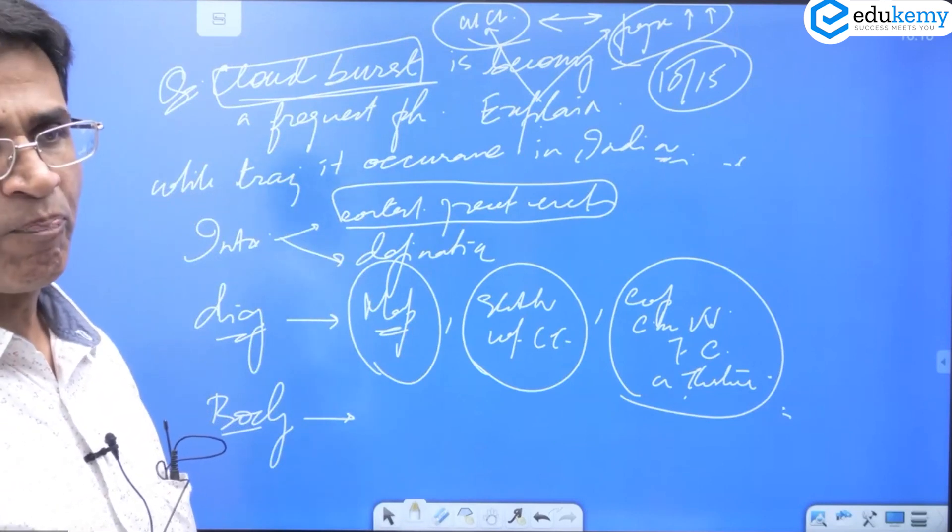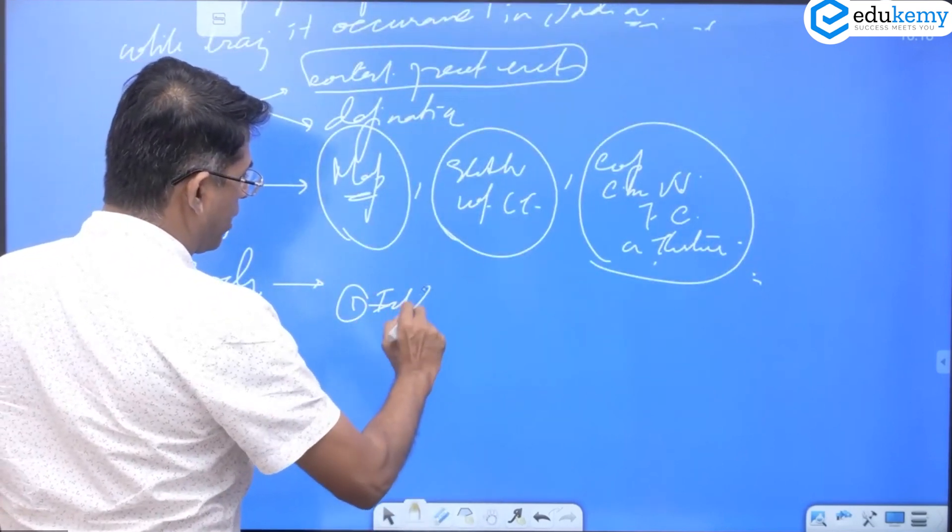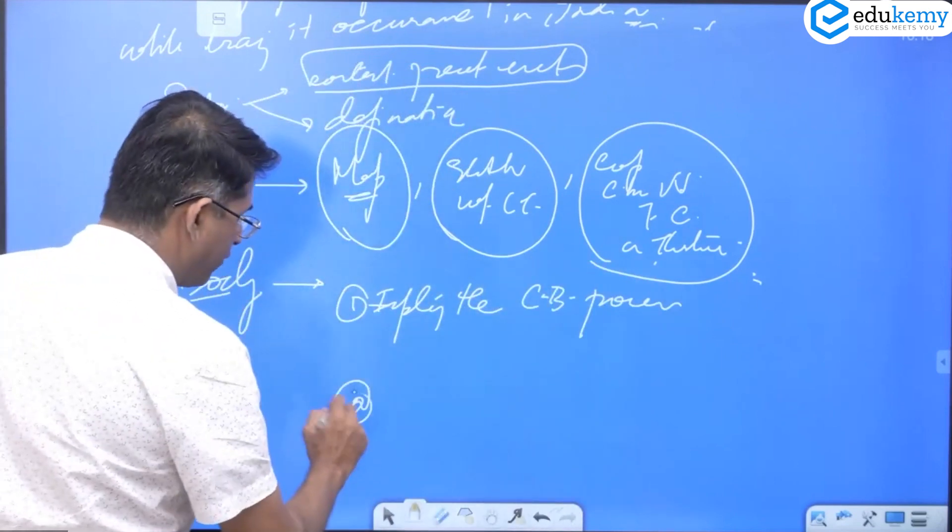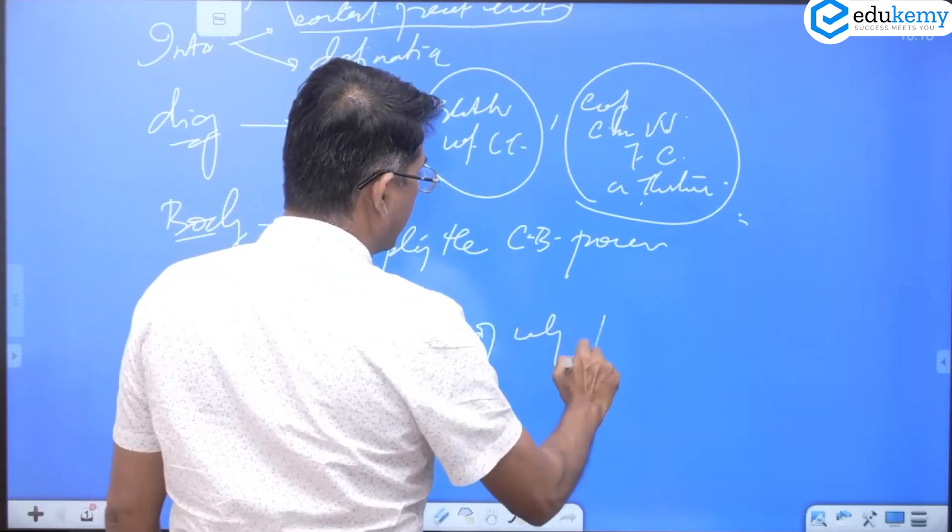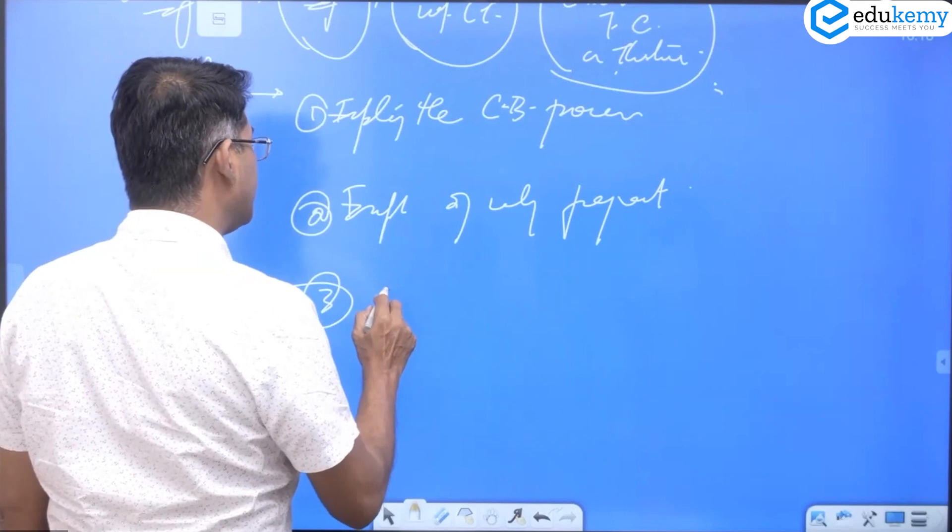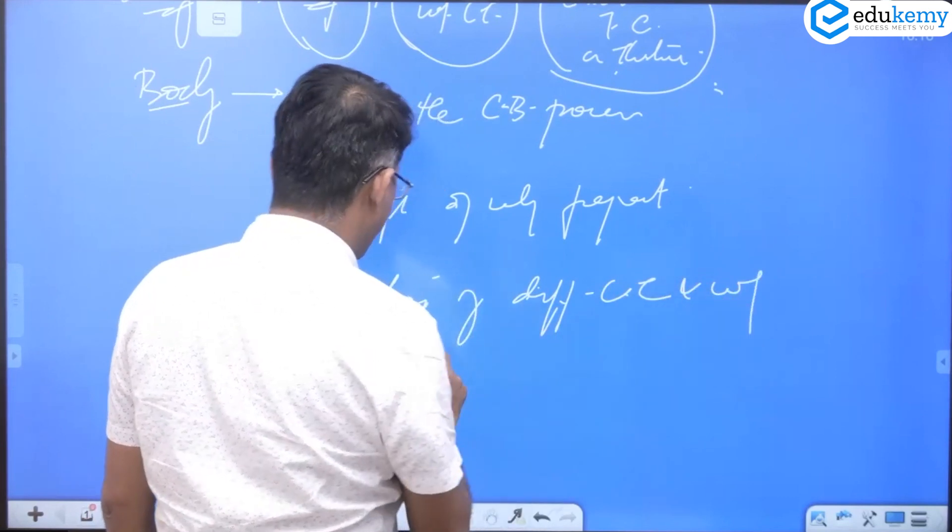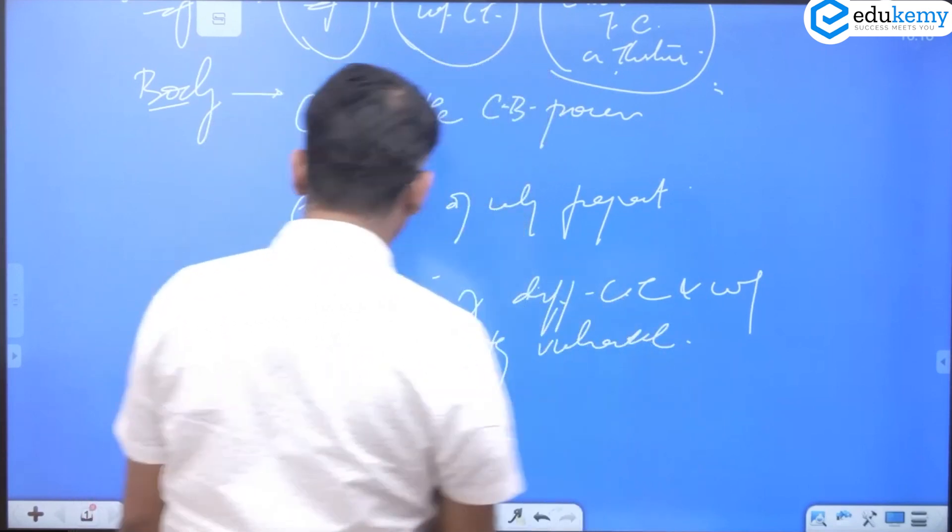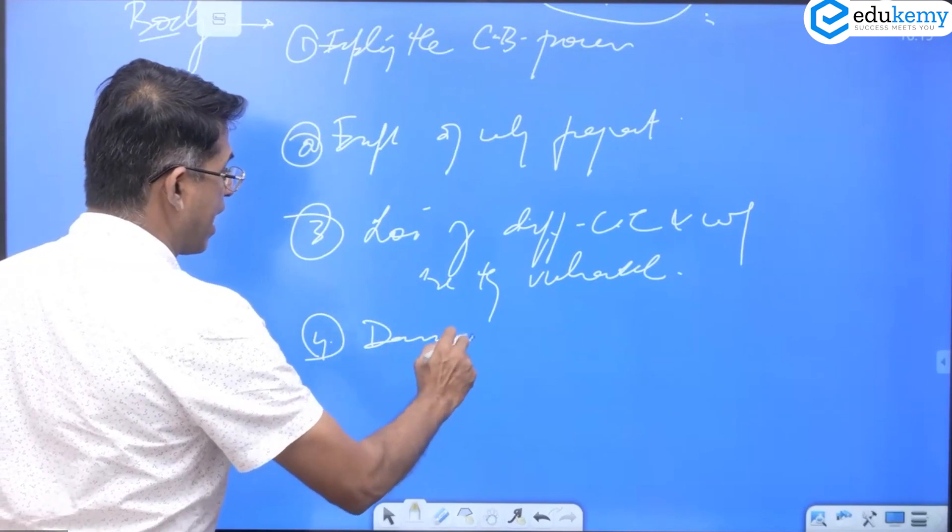So remember, this body may have: it can be about explaining the cloudburst process. You can have explanation of why frequent. There could be one discussion on the locations of different cloudbursts and why are they vulnerable. Fourth aspect could be something about what type of damage they cause.